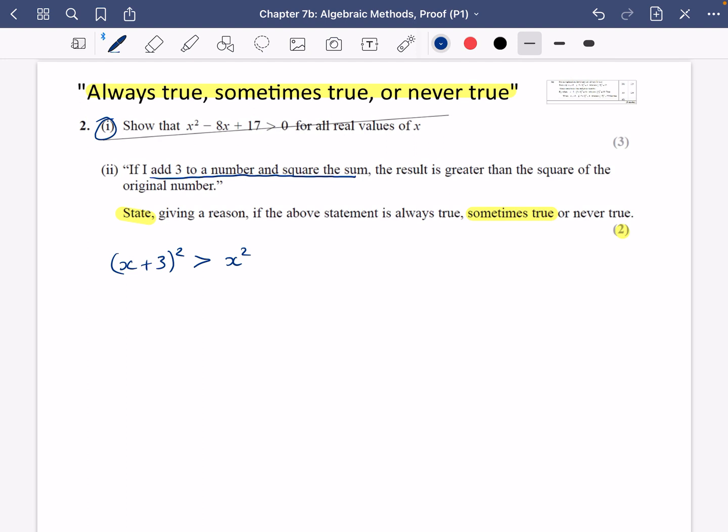So I could expand the brackets. I'm going to do (x + 3)² > x², which is x² + 6x + 9 > x². I can subtract x² from both sides, and so I get that 6x + 9 > 0, or x > -9/6, which is x > -3/2. Hence, it is sometimes true.